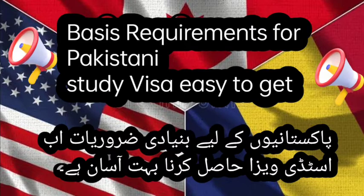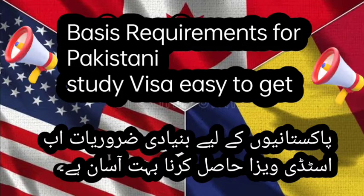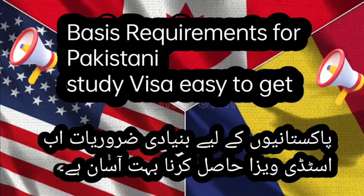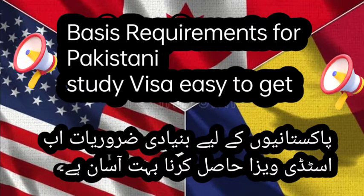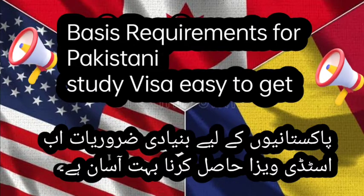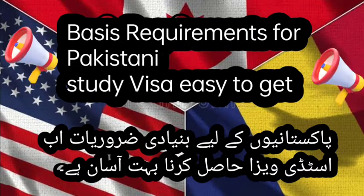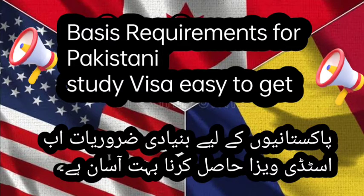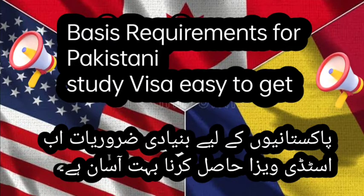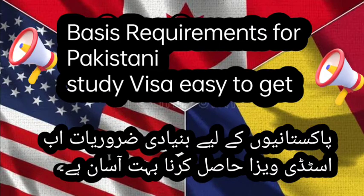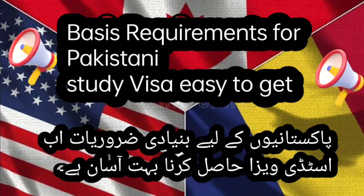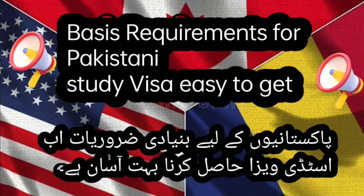After getting admission, you need to do the initial deposit, which can be 50% or your first semester deposit. After the deposit, you need to pay your visa fee and then you need to go to the embassy along with your admission letter, and then you will definitely get a study visa.